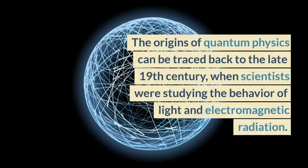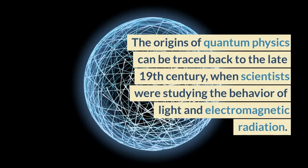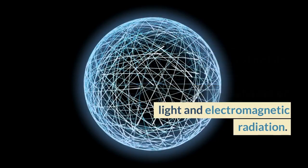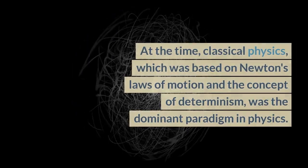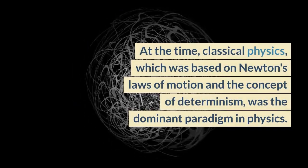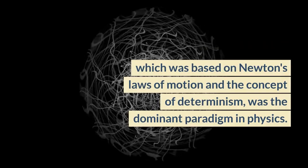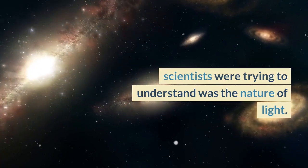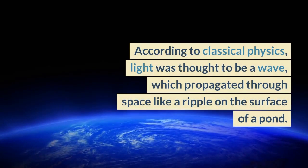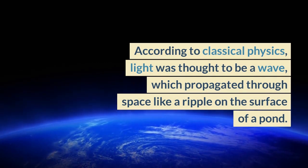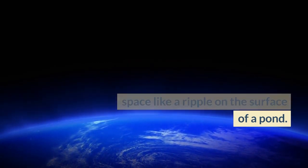The origins of quantum physics can be traced back to the late 19th century, when scientists were studying the behavior of light and electromagnetic radiation. At the time, classical physics, which was based on Newton's laws of motion and the concept of determinism, was the dominant paradigm in physics. One of the key problems that scientists were trying to understand was the nature of light. According to classical physics, light was thought to be a wave, which propagated through space like a ripple on the surface of a pond.